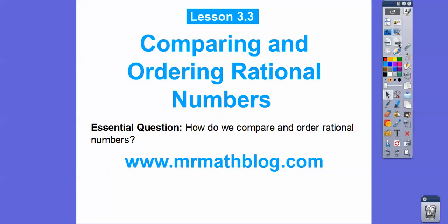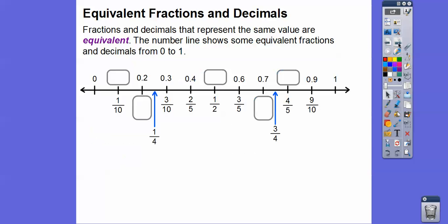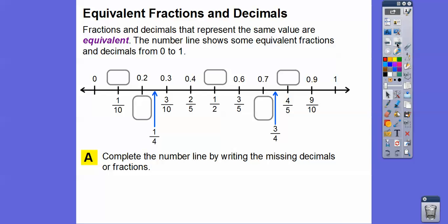So how do we compare and order rational numbers? Fractions and decimals that represent the same value are equivalent fractions or decimals. The number line shows some equivalent fractions and decimals from 0 to 1. We're going to go ahead and complete the number line by writing the missing decimals or fractions. Let's do the decimals first.